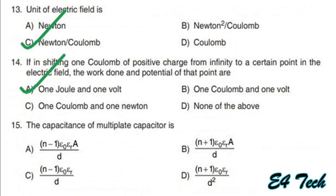Next: the capacitance of a multi-plate capacitor. For a two-plate capacitor, C = ε₀ × εᵣ × A/d. For n number of plates, C = ε₀ × εᵣ × (n−1) × A/d. That is option A.